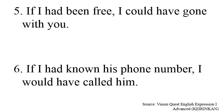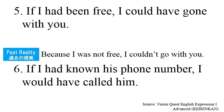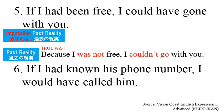Look at the sentences here. Number five: if I had been free, I could have gone with you. The past reality behind this sentence uses the verbs 'was not' and 'couldn't go' — they are in the past form. So this is the past reality, the true past. On the other hand, sentence number five shows impossible past reality, which is the opposite of the past reality.